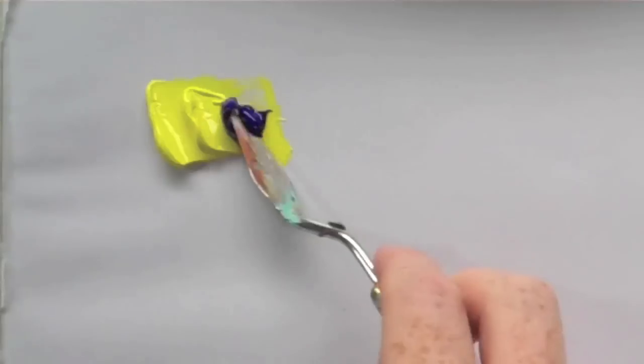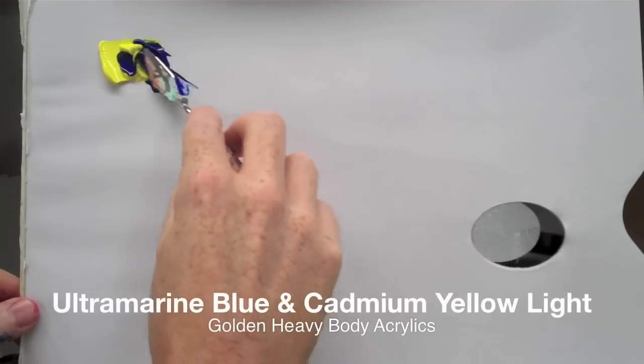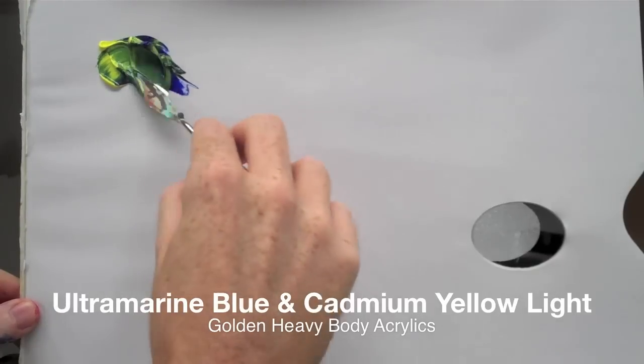Okay, let's get started. This is the green made with the ultramarine blue and cad yellow light.